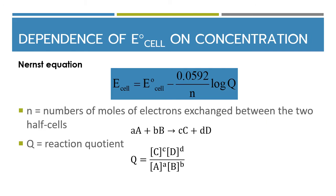Now what about non-standard conditions? What is the E_cell when we do not use a concentration of one molar? This is the Nernst equation, used to calculate E_cell at any condition rather than only at standard conditions: E_cell = E°_cell minus (0.0592 / n) × log Q. When not at standard condition or equilibrium, we use log Q — the reaction quotient — instead of log K. You must know your products and reactants to form the ratio Q.